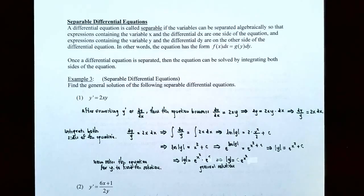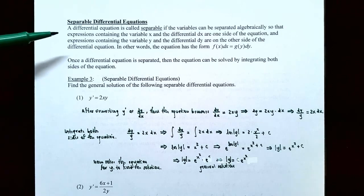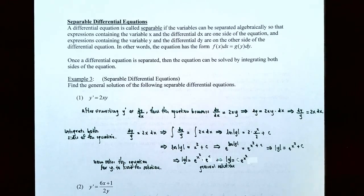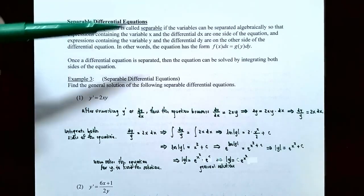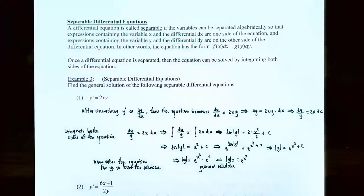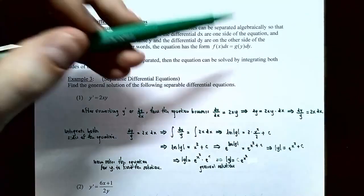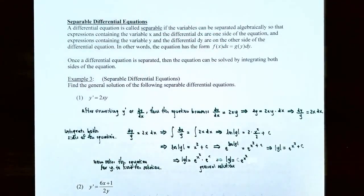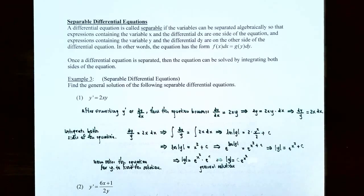Now let's talk about how to actually solve differential equations. The first type is called a separable differential equation. A differential equation is called separable if the variables can be separated algebraically, so that expressions containing x and dx are on one side, and expressions containing y and dy are on the other side. Once separated, the equation can be solved by integrating both sides.